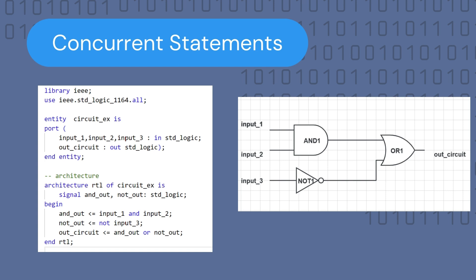The entity contains three input ports — input_one, input_two, and input_three — as inputs of the std_logic type, and the output port which is out_circuit. For the architecture, we have used some signals to assist us in writing the behavior of the circuit. We created a signal called and_out, which is the AND operation of input_one and input_two, and a signal for the output of the NOT gate called not_out, which is NOT of input_three.